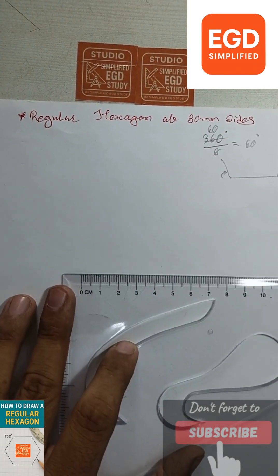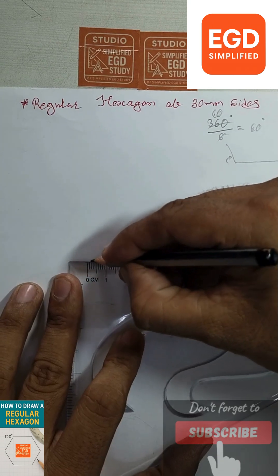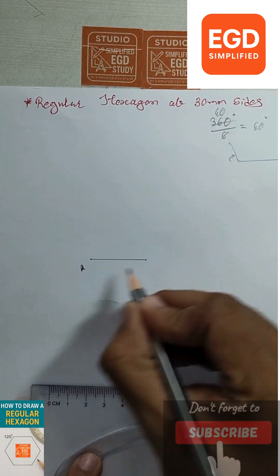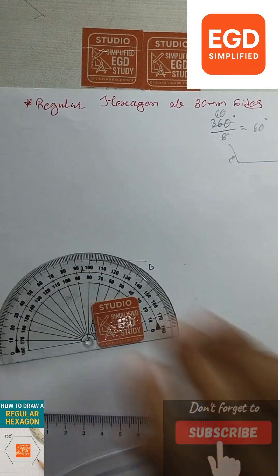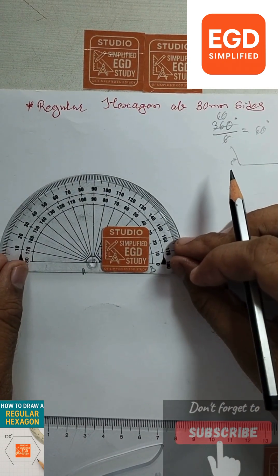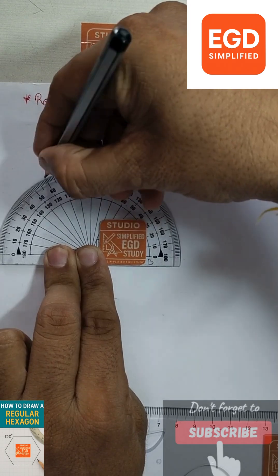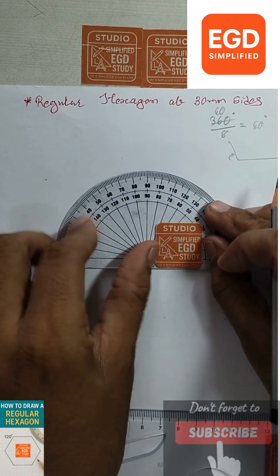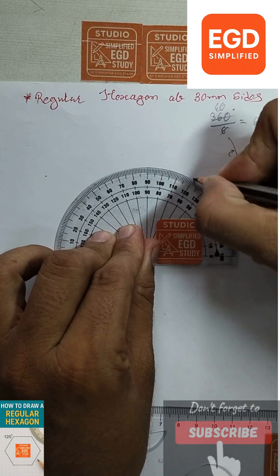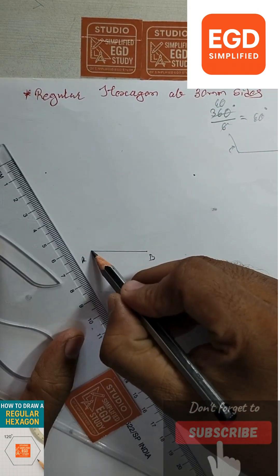draw a 30mm long line. Now measure an angle of 60 degrees from the outer side from point A, and from the outer side from point B. Connect the points.